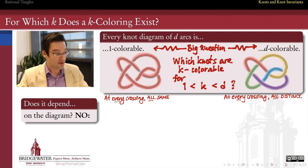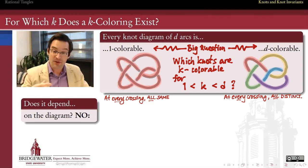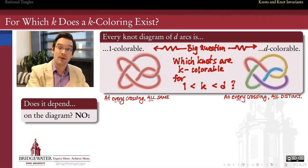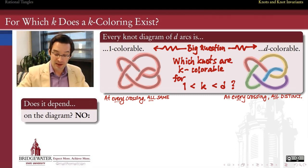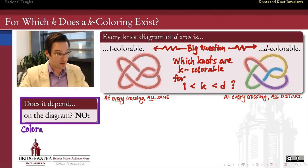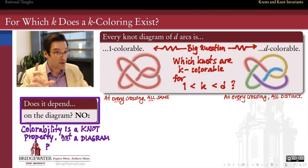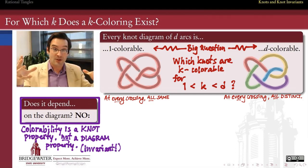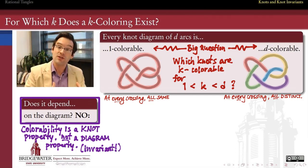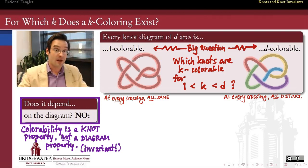A natural question is: does whether or not a knot is K-colorable depend on how we diagram that knot? If you give me a different diagram for the same knot, am I guaranteed to reach the same conclusions about colorability? Fortunately, the answer is no — colorability is not a property of the diagram, but an intrinsic property of the knot itself, regardless of which diagram is used. In other words, it's an invariant. Colorability is a knot invariant.